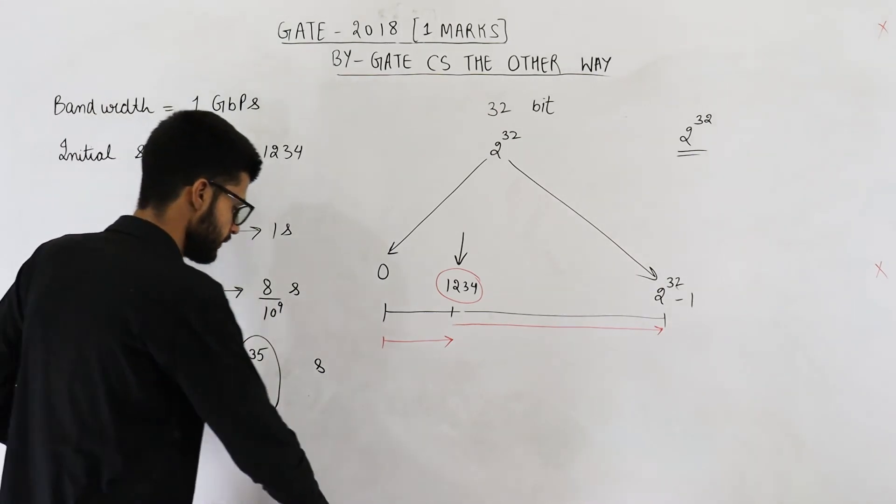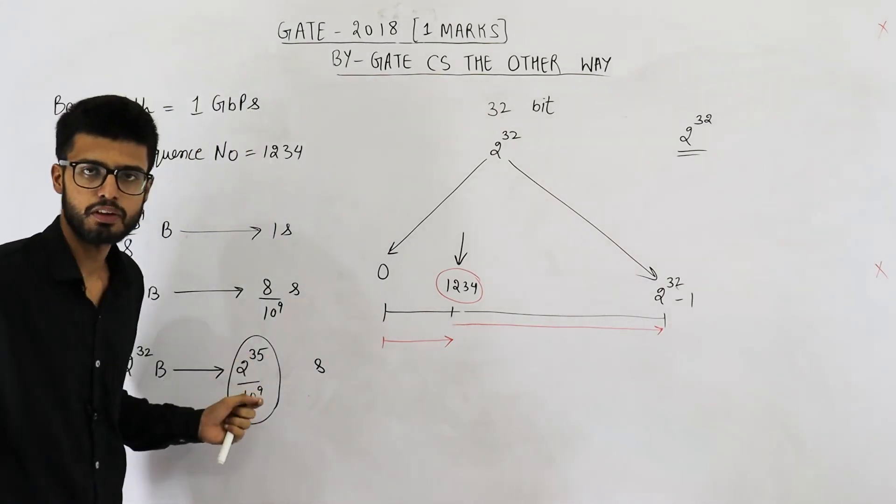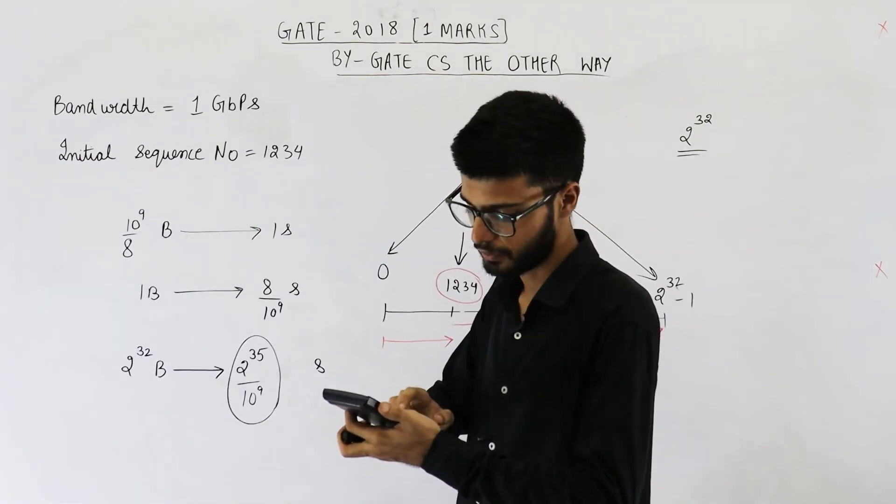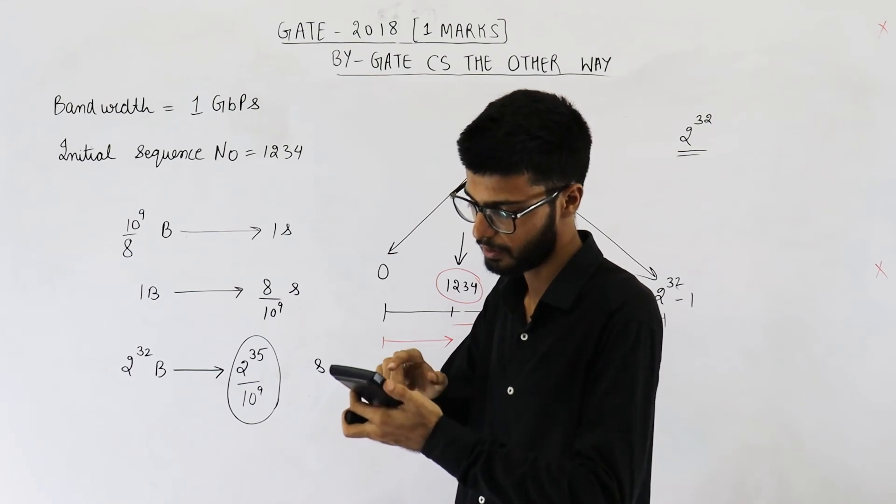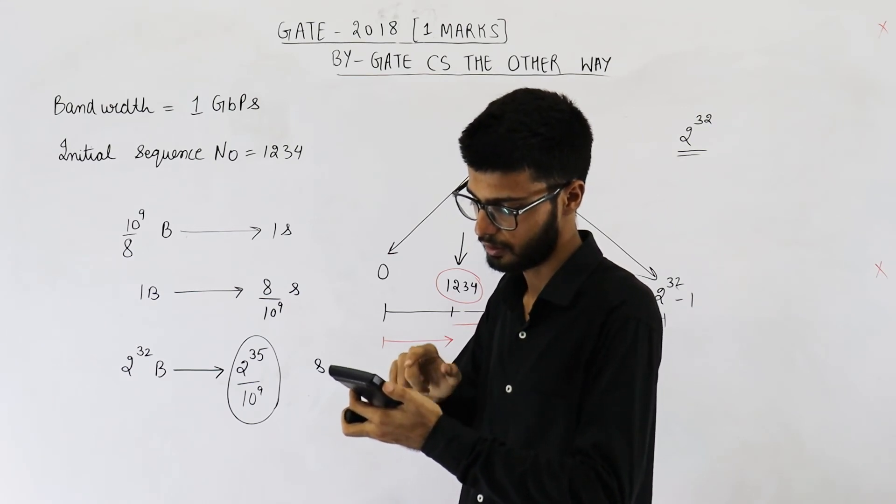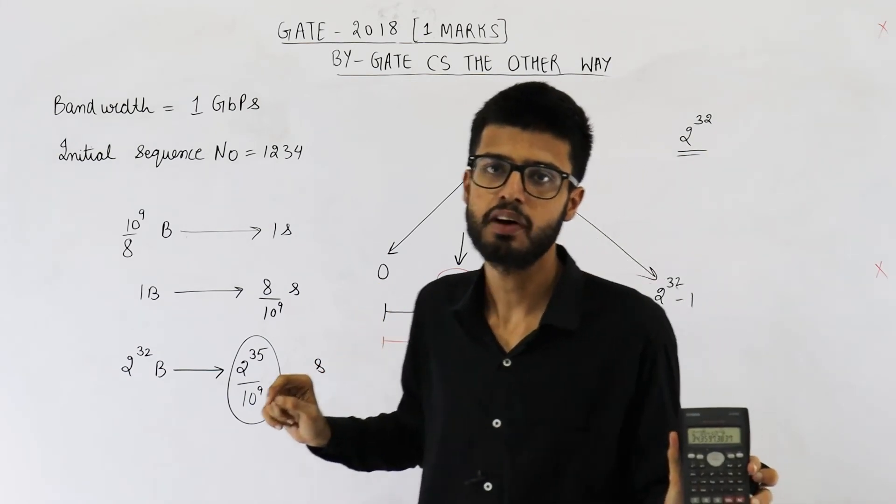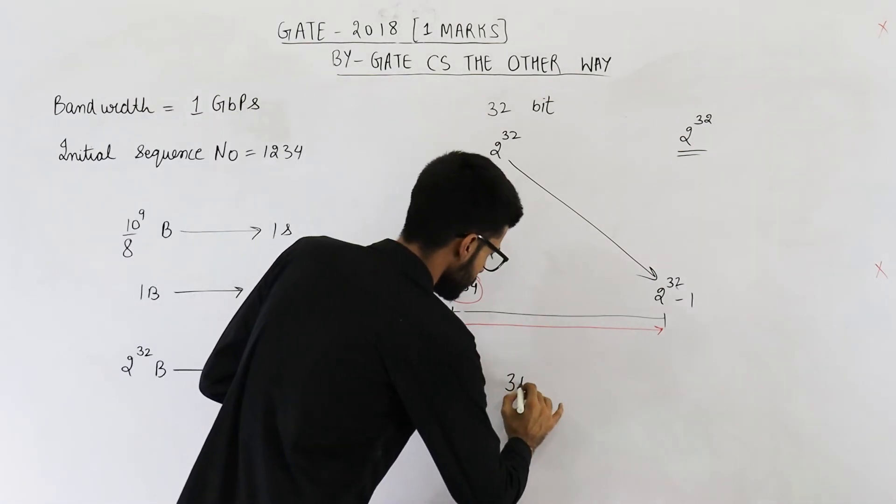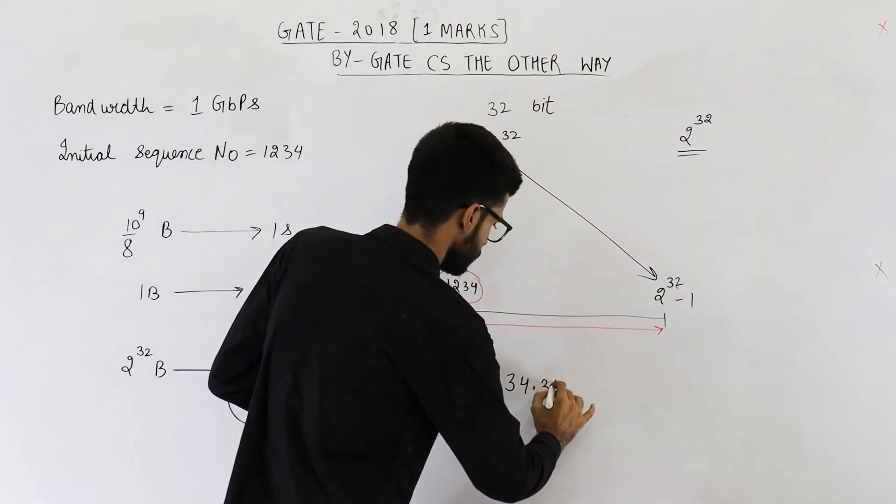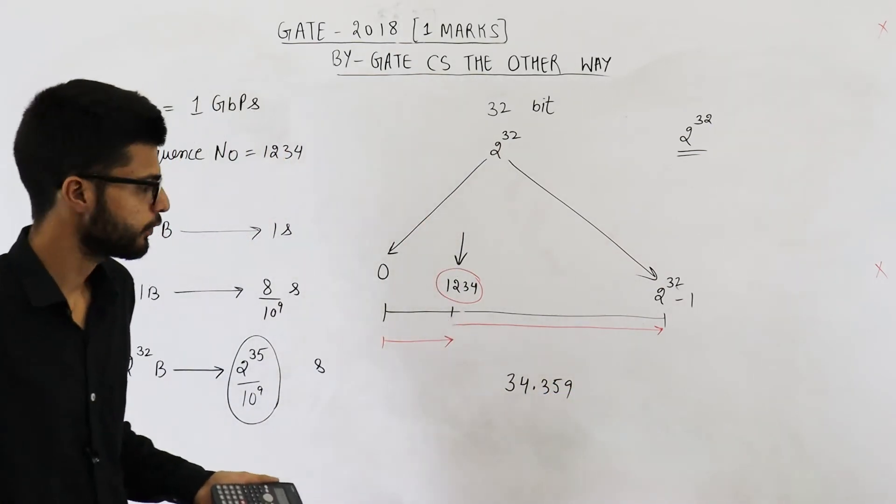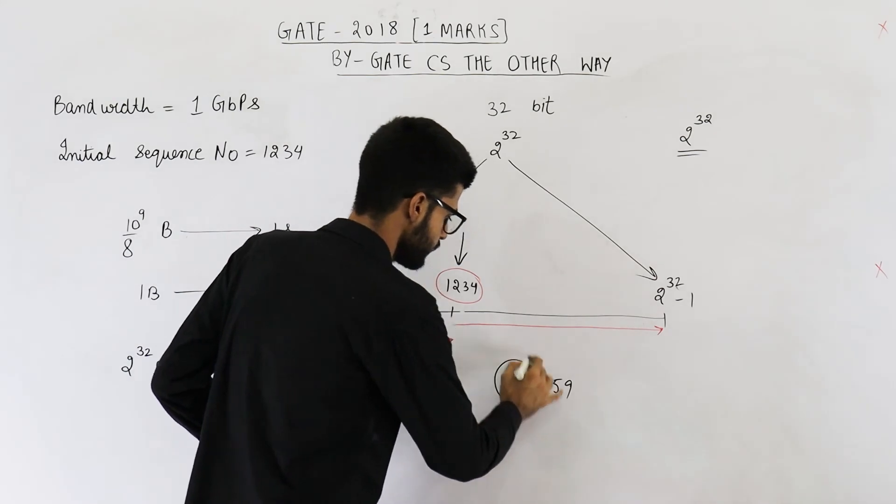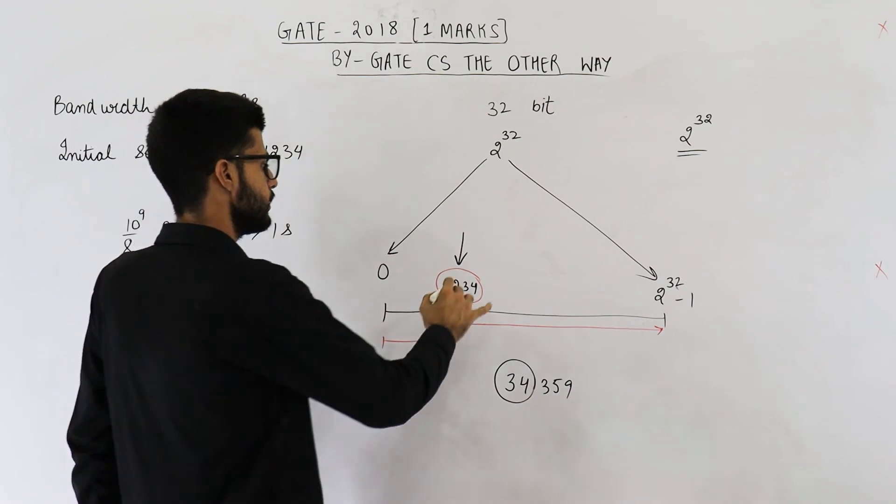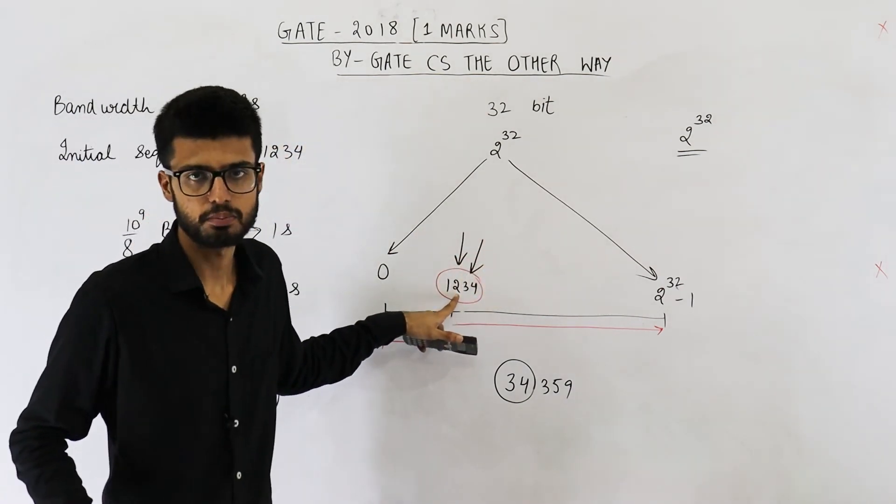Let us just find its value. They were asking us to round off it to the nearest integer. So this is 2 raised to the power 35 divided by 10 raised to the power 9. This is 34.359. Even if it's not visible, I'll write it 34.359. You just round it off to the nearest integer and you will get 34. Answer to this question is 34 seconds are required to reuse this sequence number.